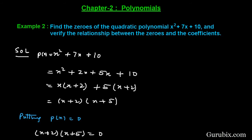Welcome friends. In this video we shall solve example number 2 of chapter 2 of class 10. The example is: find the zeros of the quadratic polynomial x squared plus 7x plus 10, and verify the relationship between the zeros and the coefficients. First of all, we shall collect the given polynomial x squared plus 7x plus 10.